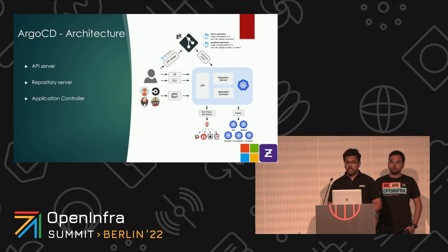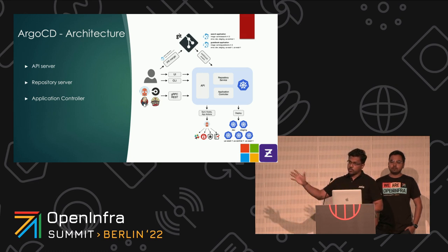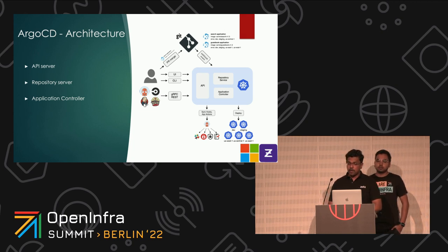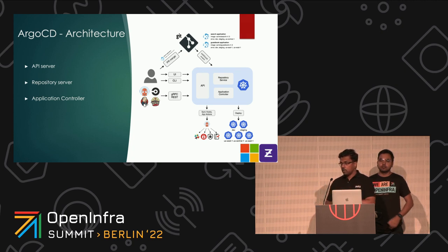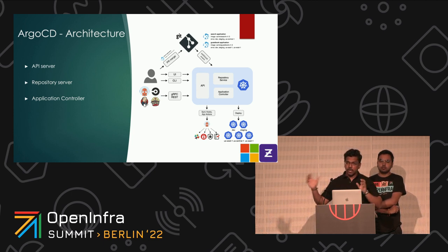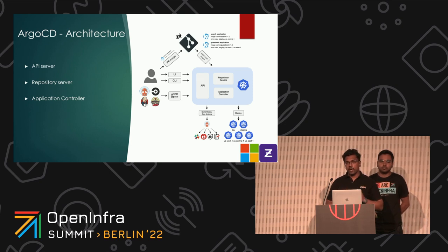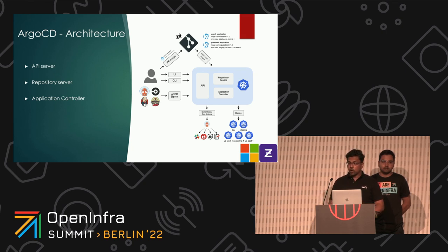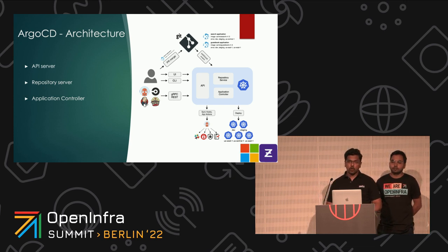Finally, there is the application controller — a Kubernetes controller that monitors running applications and compares the current live state with the desired target state as specified in the repo. It detects out-of-sync applications, meaning a change in the GitHub repository that hasn't been deployed yet. It can optionally take action via manual or auto-sync. It is also responsible for invoking user-defined hooks for lifecycle events, supporting advanced deployments like canary or blue-green.